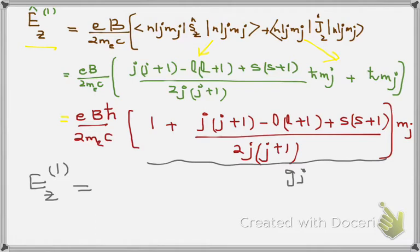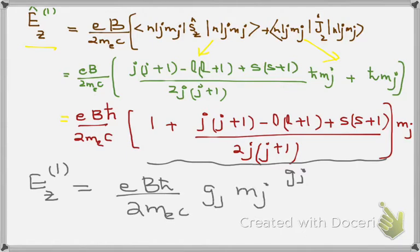So you can have first order correction due to Zeeman energy: E = Bℏ/2m × Bz × mj. It can also be written as B × μB (Bohr magneton) × Landé g-factor × mj. This is the first order splitting in energy due to Zeeman effect.